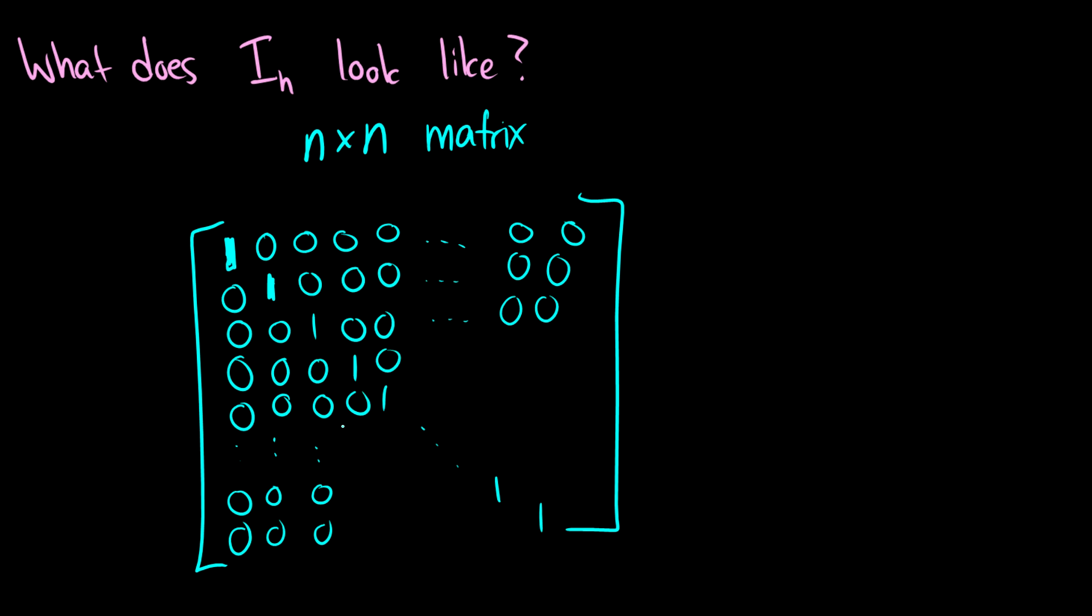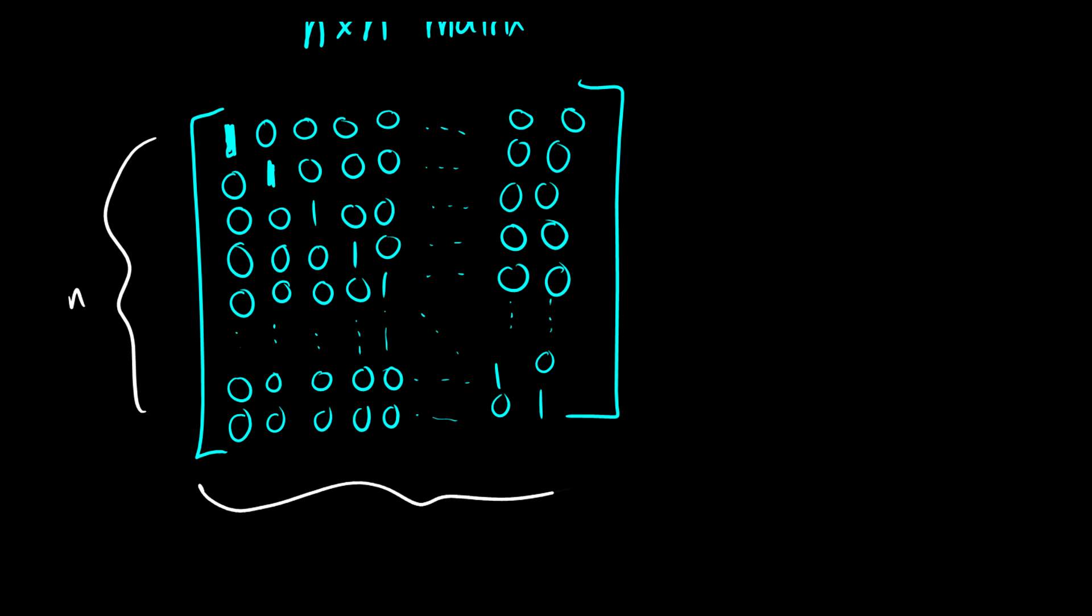And this will always give you back the item that you're multiplying by. This will have n rows and it will also have n columns.